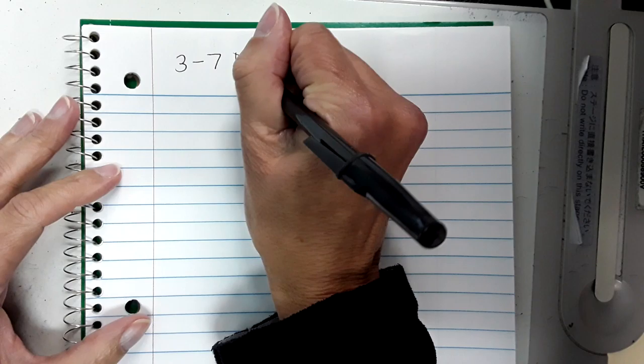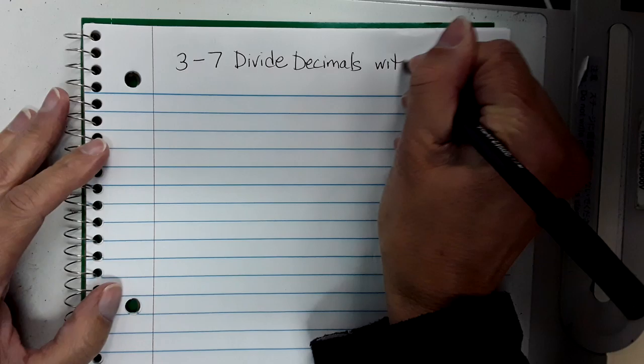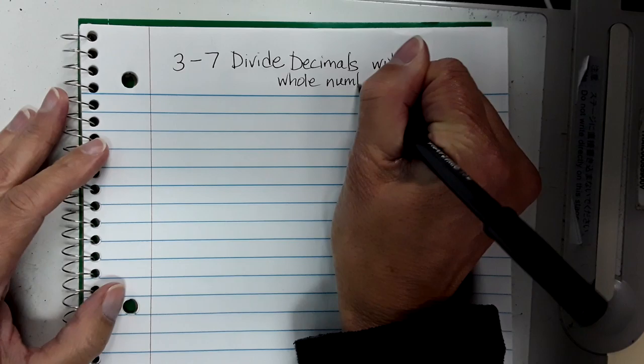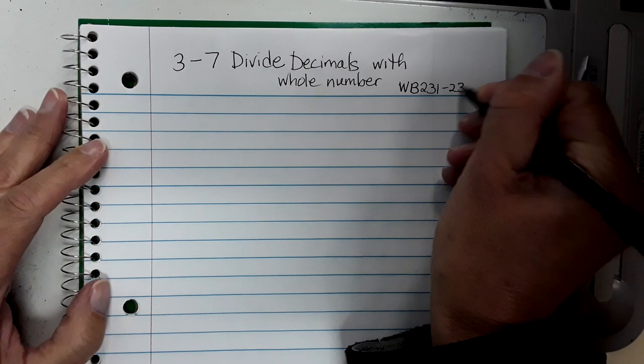Hello students! Today we're in Chapter 3, Lesson 7: How do we divide decimals? Today we're going to talk about decimals with a whole number. So how do we divide decimals with a whole number? This is going to follow the workbook, pages 231 to 238.